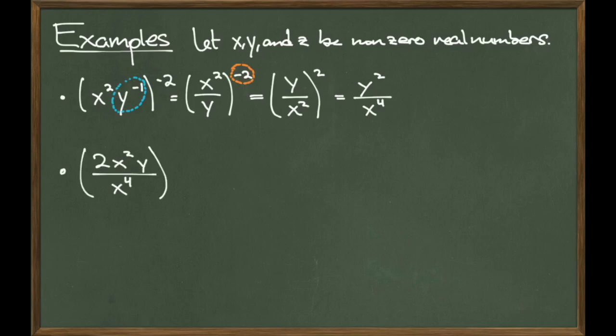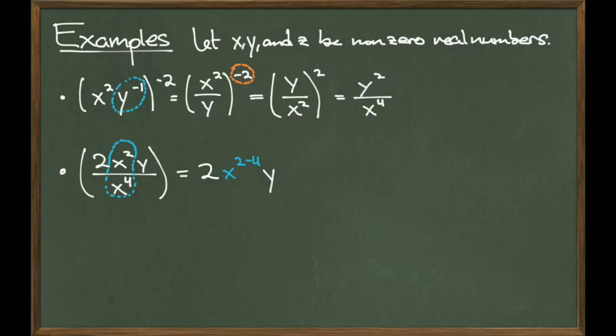For our next example, consider the quantity 2 times x squared times y divided by x to the fourth. Since we have a power of x in the numerator and another power of x in the denominator, we can use the quotient rule: x squared divided by x to the fourth becomes x to the 2 minus 4. We're only moving the x terms, preserving the 2 and the y. Carrying out the subtraction gives us 2 times x to the minus 2 times y. Changing the negative exponent's location in the fraction, we get 2 times y over x squared as our final answer.